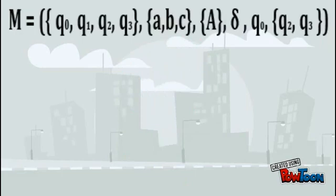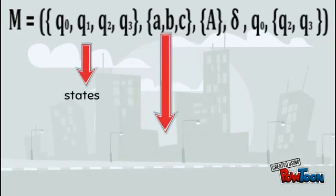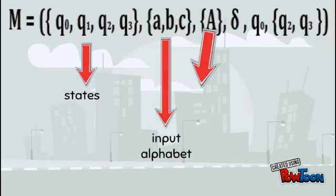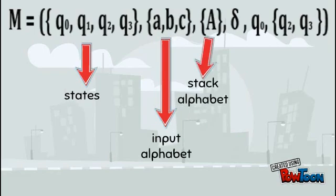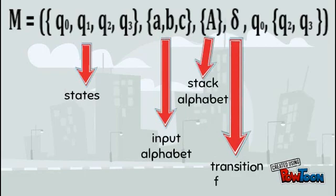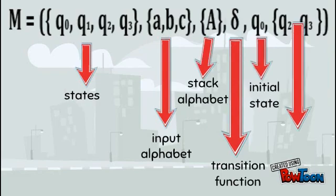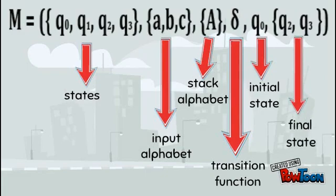This is the question as shown to you. This is as it states. A, B, C will be your input alphabet. A is your stack alphabet. Of course, delta as your transition function. Q0 as an initial state. Q2 and Q3 will be your final states.